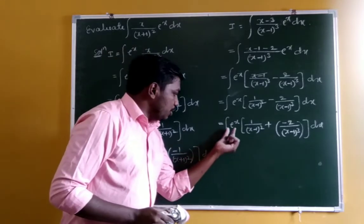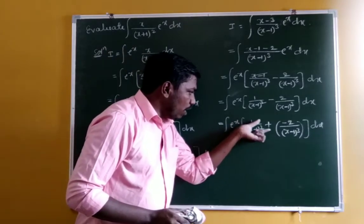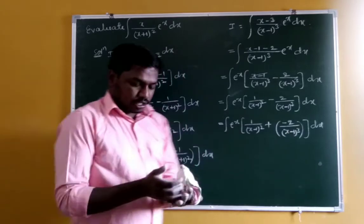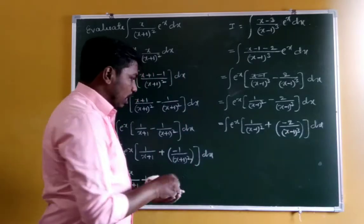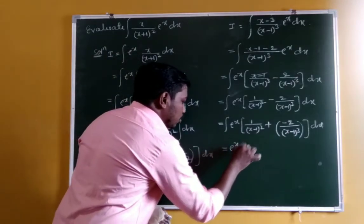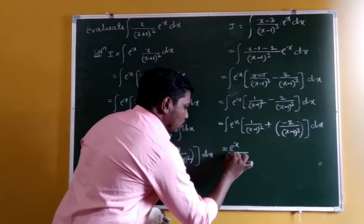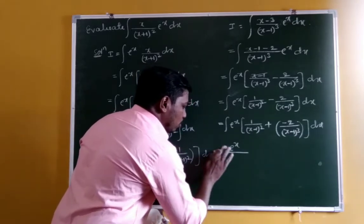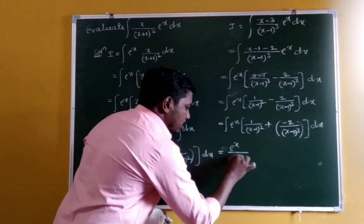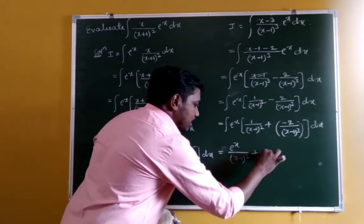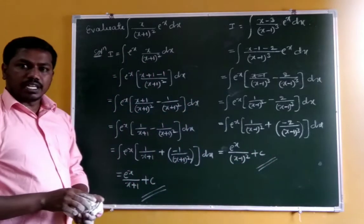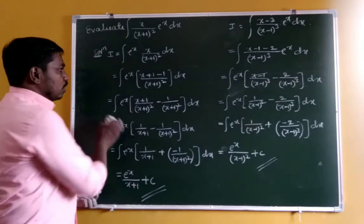Applying the formula ∫eˣ[f(x) + f'(x)]dx = eˣ·f(x) + C, the answer is eˣ/(x−1)² plus integration constant. This is the required answer.